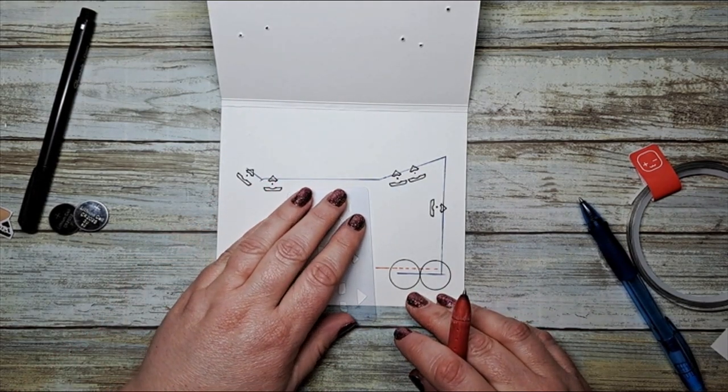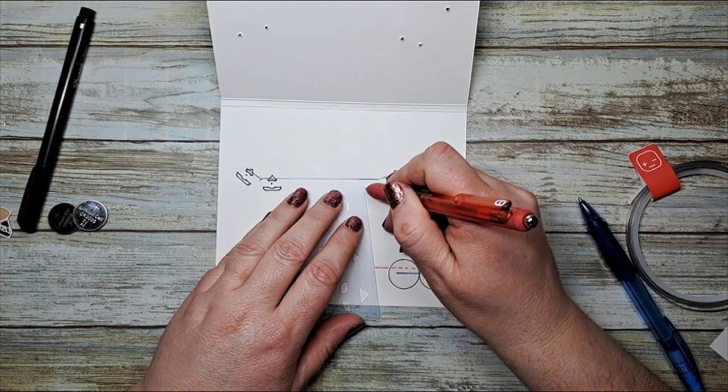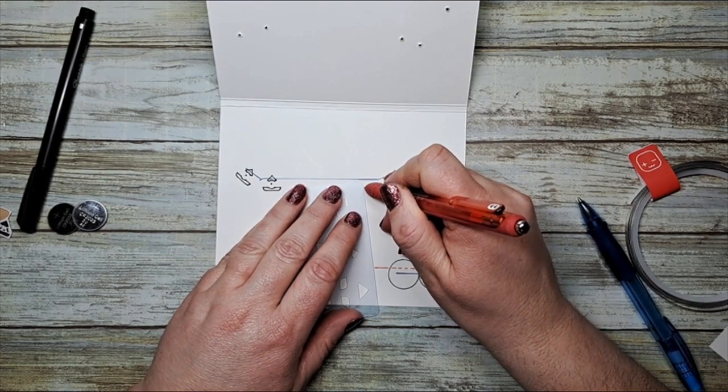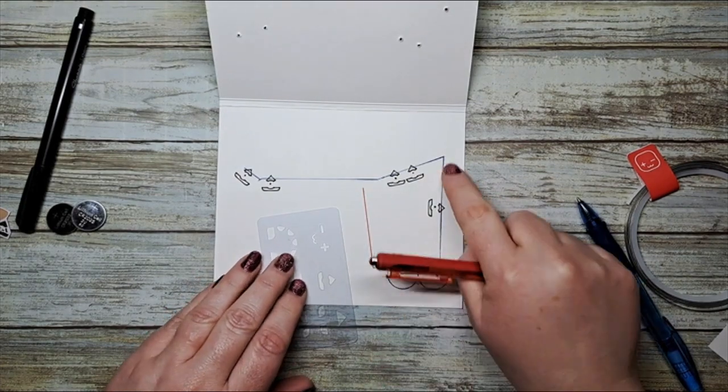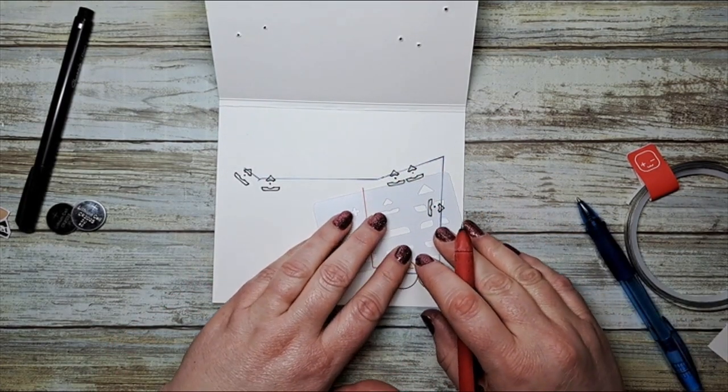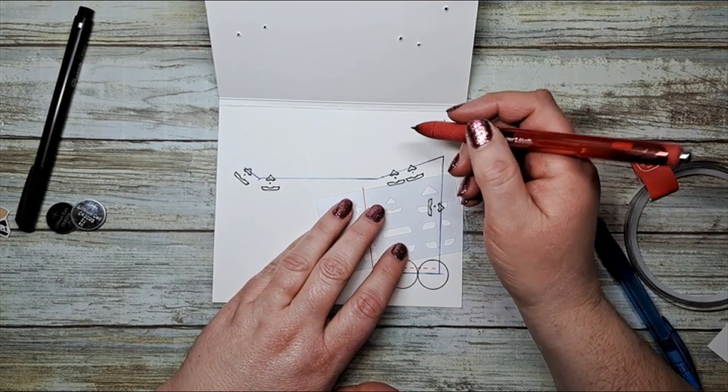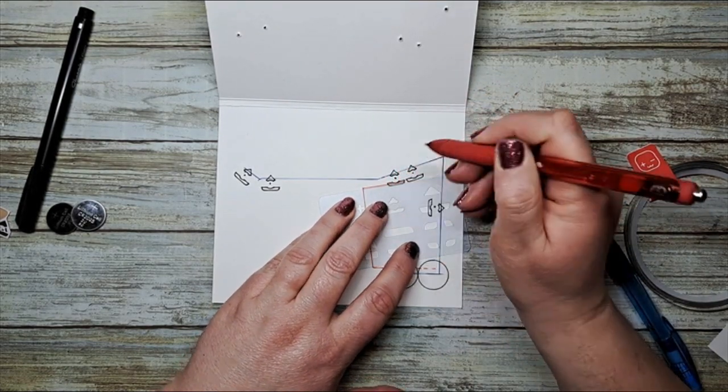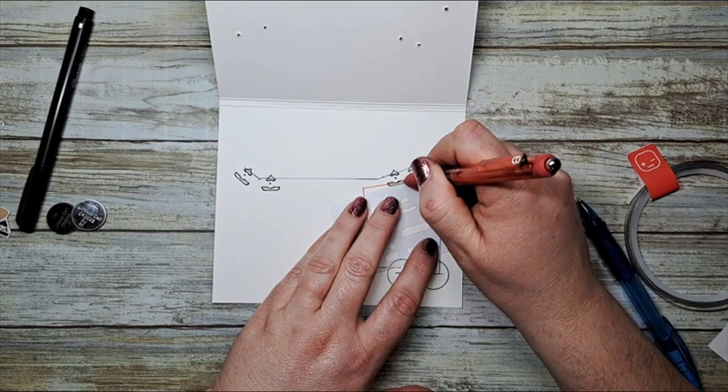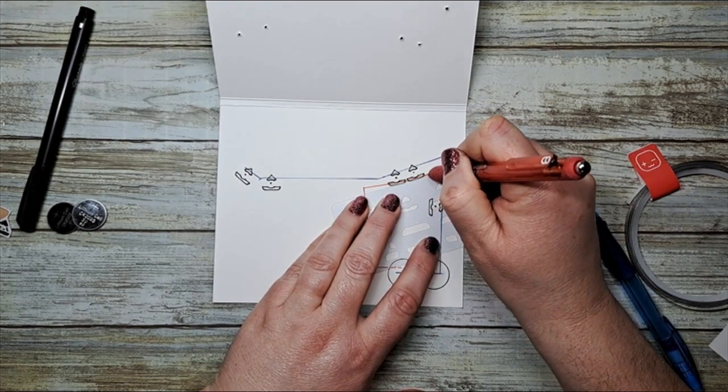And I'll show you this way. So what you can do is you can actually instead of making it a complete single line, like this one is a complete single line, you can actually branch off and it works just the same. So the same idea goes for the positive side is that you want to touch all of those positive sides of the stickers.